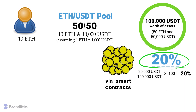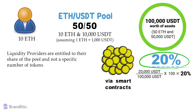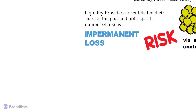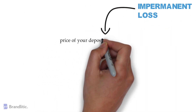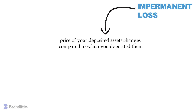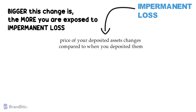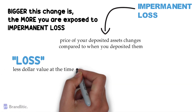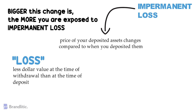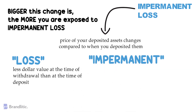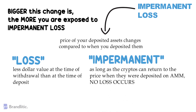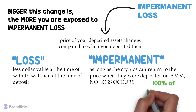This is where the concept of impermanent loss comes into play. Since liquidity providers are entitled to their share of the pool and not to a specific number of tokens, they are exposed to another layer of risk — impermanent loss. It happens when the price of your deposited assets changes compared to when you deposited them. The bigger this change is, the more you are exposed to impermanent loss, meaning less dollar value at the time of withdrawal than at the time of deposit. It is called impermanent because as long as cryptos return to the price at which they were deposited on the AMM, no loss occurs and the liquidity providers also get 100% of the trading fees.